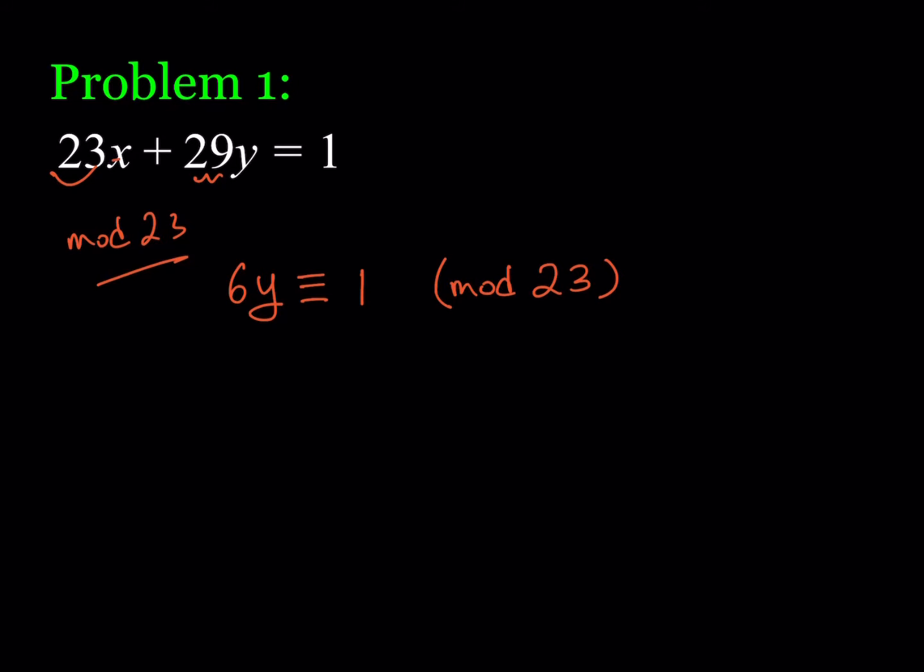We don't have fractions in modular arithmetic, but we have inverses. Every number has an inverse — not in every mod, but 23 is a prime number. We need to get rid of the 6, so we multiply by its multiplicative inverse, which is 4, because 4 times 6 is 24, which is congruent to 1 mod 23.